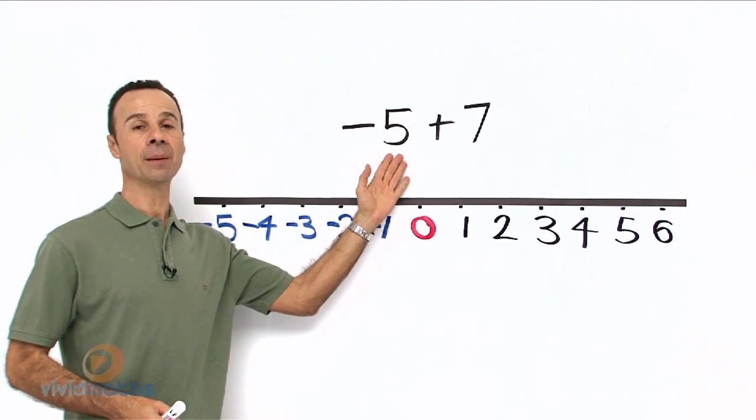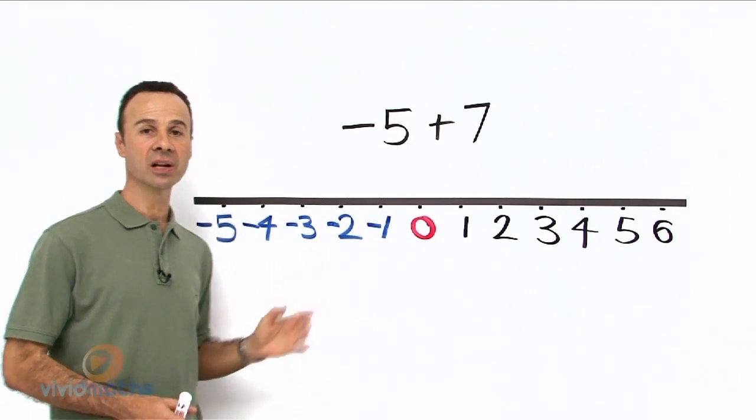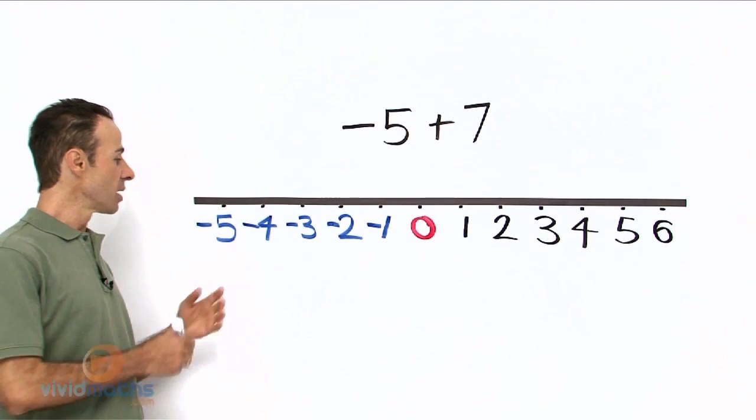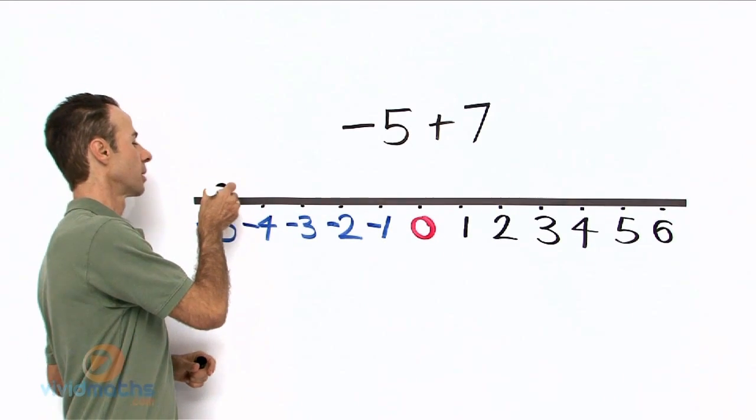Step number 1 is take the left hand number and mark it on the number line. So let us find negative 5 now. Negative 5 is way here to the left of the zero. So we mark that out. That is the first step.